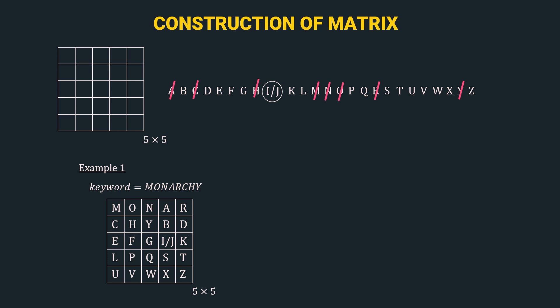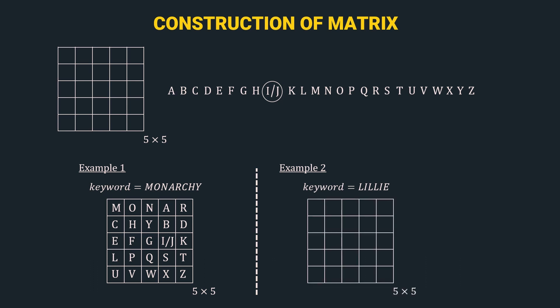Let's take another example to clear our concepts. In example 2, the keyword is 'lily'. Step 1: input all unique letters in the keyword in order. We start with L, then I and J together — remember, I and J always go together. Then the next L is already included, so we skip it. Again, L and I are already included. Finally, we have E.